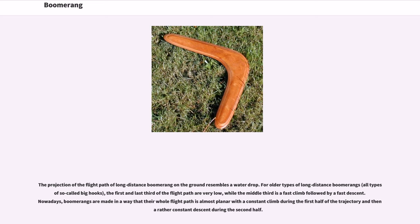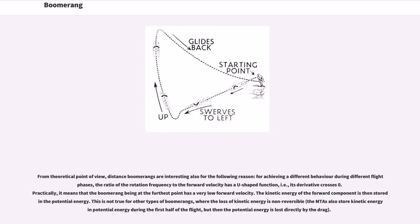The projection of the flight path of a long-distance boomerang on the ground resembles a water drop. For older types, so-called big hooks, the first and last third of the flight path are very low, while the middle third is a fast climb followed by a fast descent. Nowadays, boomerangs are made so that their whole flight path is almost planar, with a constant climb during the first half of the trajectory and a rather constant descent during the second half. From a theoretical point of view, distance boomerangs are interesting because the ratio of rotation frequency to forward velocity has a U-shaped function — its derivative crosses zero. Practically, this means the boomerang at its furthest point has very low forward velocity, and the kinetic energy of the forward component is stored as potential energy. This is not true for other types of boomerangs, where the loss of kinetic energy is non-reversible. MTAs also store kinetic and potential energy during the first half of flight, but the potential energy is then lost directly by drag.